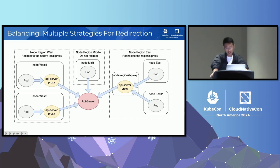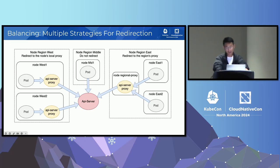For example, in some scenarios, node-local redirection might occur on all global and regional nodes, forwarding requests to a node proxy, as shown on the left of the picture. On other regional nodes, global redirection can be applied, forwarding requests to the regional API server proxy, as shown on the right of the picture. Meanwhile, nodes running critical services could apply no redirection at all. With multiple redirection strategies, different nodes across regions can exhibit various redirection behaviors as needed.